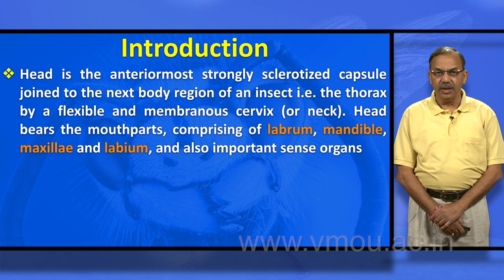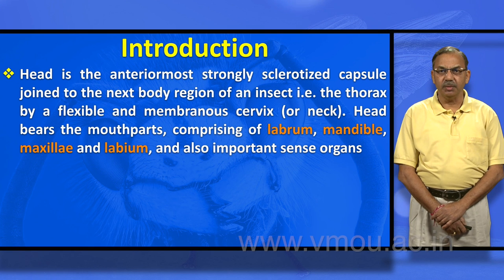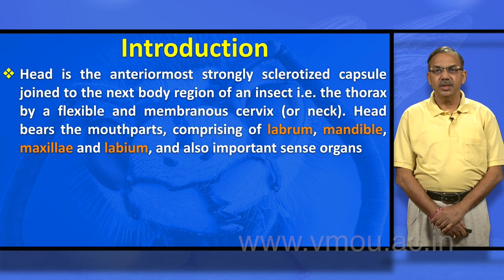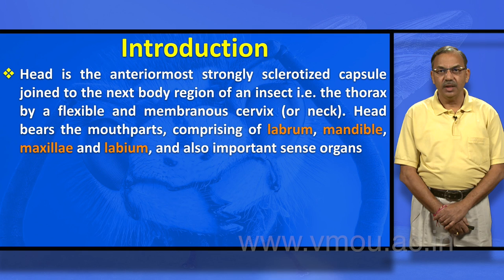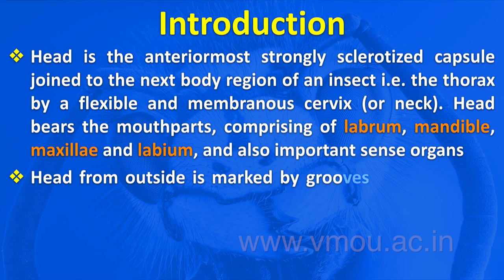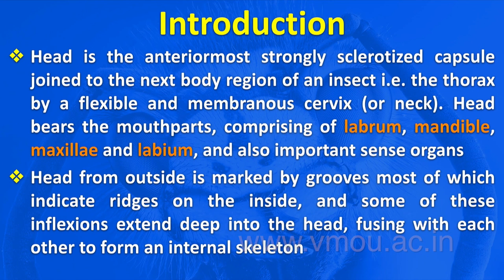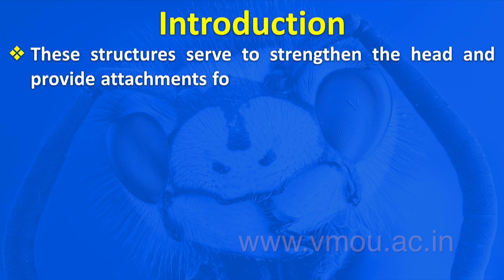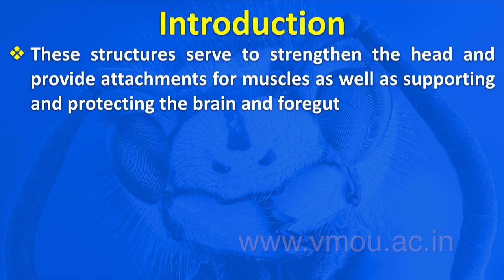The mouth parts are labrum, mandible, maxilla, and labium, and also important sense organs. The head capsule is marked by grooves, most of which indicate ridges on the inside, and some of these inflections extend deep into the head, fusing with each other to form an internal skeleton. These structures serve to strengthen the head and provide attachments for muscles, as well as supporting and protecting the brain and foregut.